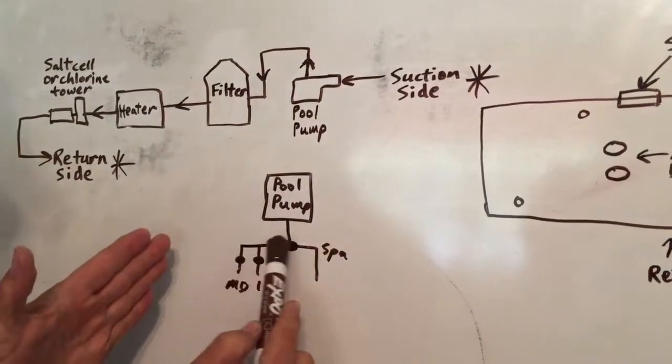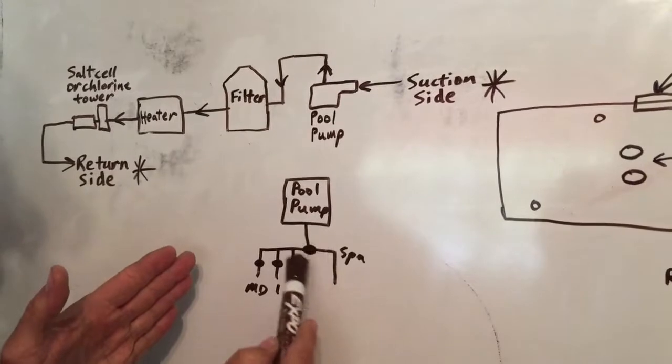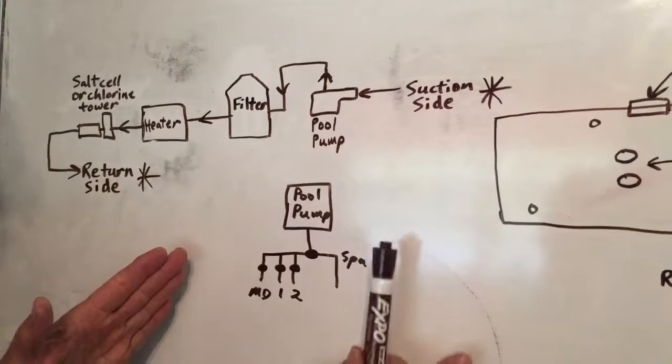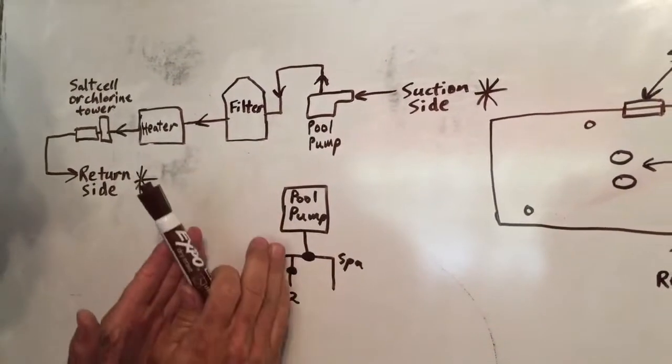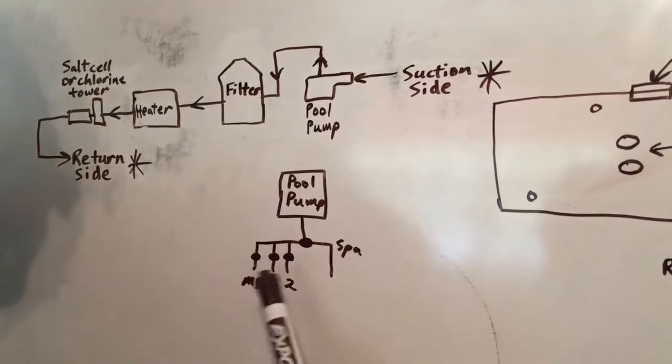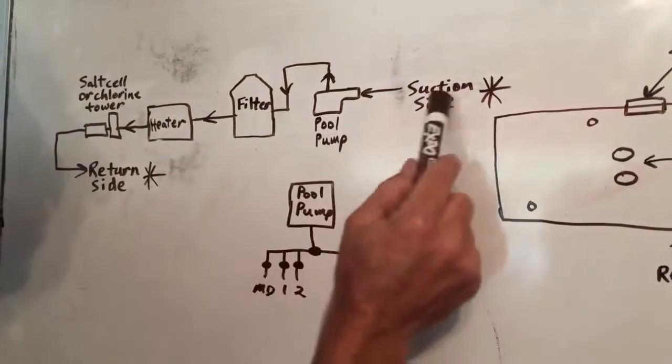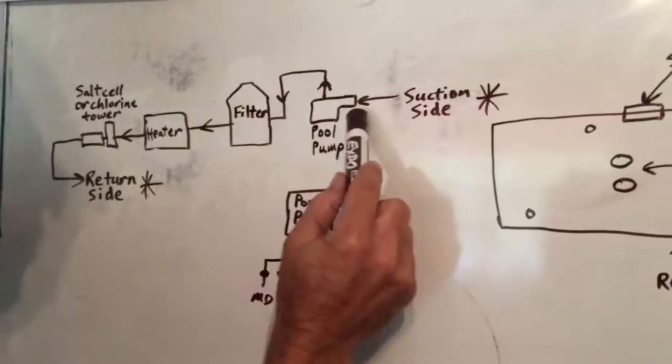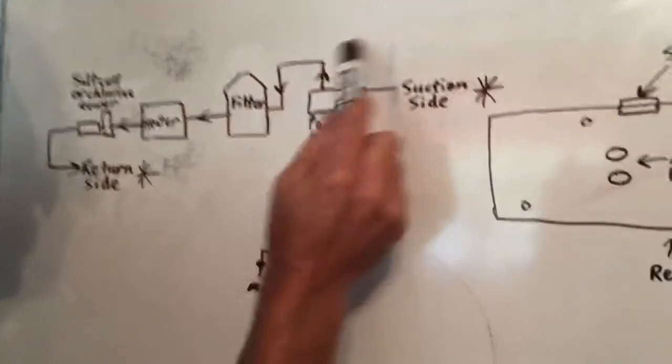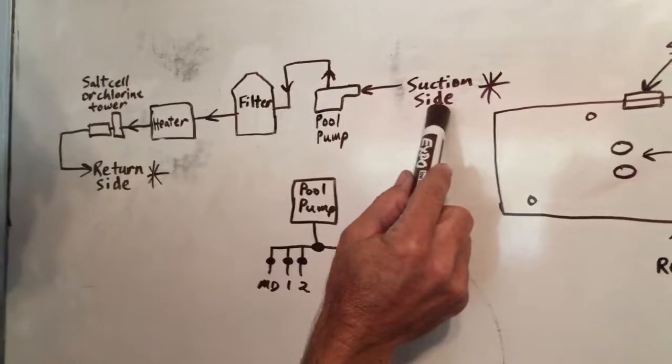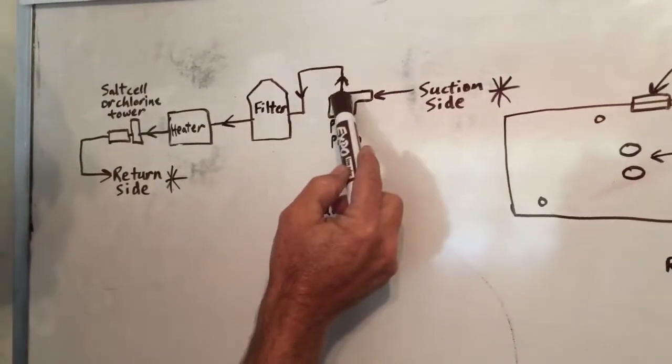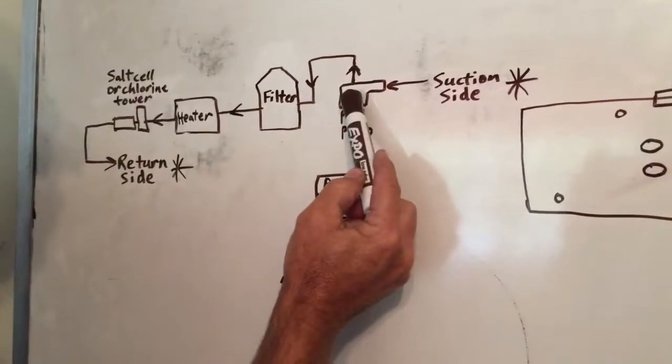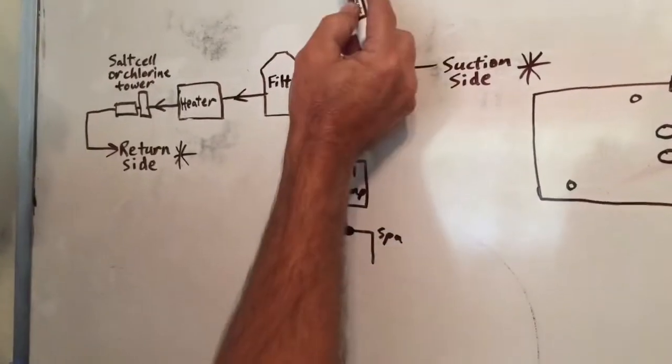This is coming in. They're tied together. And then there's a control valve here separating the spa side suction from the pool side suction. And then it comes into the pool pump. Anything in front of the pump is called the suction side.